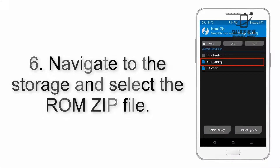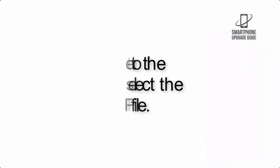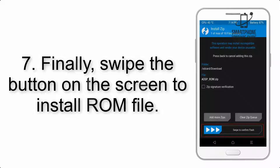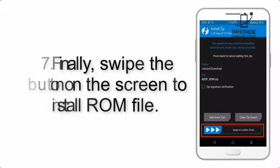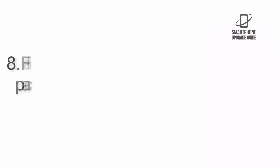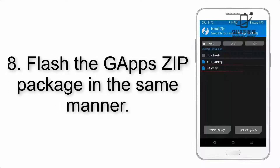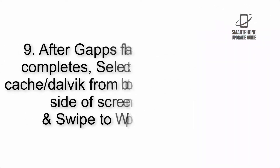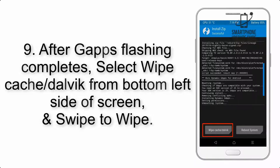Step 5: Go back to the recovery main screen and tap on the Install button. Step 6: Navigate to the storage and select the ROM zip file. Step 7: Finally, swipe the button on the screen to install the ROM file.